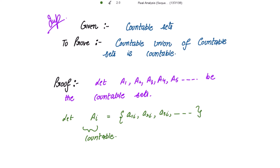What is a countable set? A set is countable if and only if all its terms can be arranged in a sequence. So we need to arrange the elements of the union of countable sets in a sequence. From here, let's write the elements for A1 — just put i equal to 1 — we get a11, a21, a31, a41, and so on.